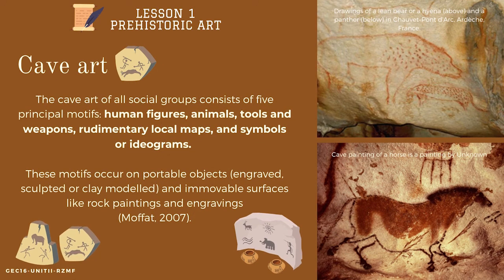Look at these pictures. The first one is a drawing of a lean bear or a hyena and a panther in Chauvet-Pont-d'Arc, Ardèche, France. Another one is a cave painting of a horse. It is important to take note that the cave art of all social groups consists of five principal motifs: human figures, animals, tools and weapons, rudimentary local maps, and symbols or ideograms. These motifs occur on portable objects — engraved, sculpted, or clay-modeled — and immovable surfaces like rock paintings and engravings.